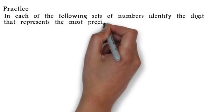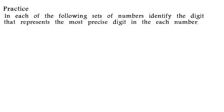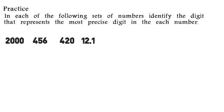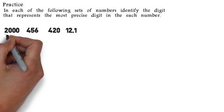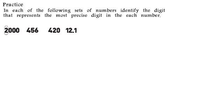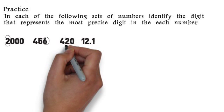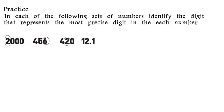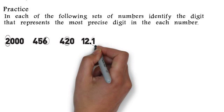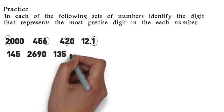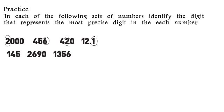Let's do some practice. In each set of numbers we'll first identify the digit that represents the most precise digit in each number. In 2000, the 2 is significant and the three zeros are placeholders, so the 2 is the most precise digit. In 456 the 6 is the most precise digit. In 420 the 2 is the most precise digit because the zero is a placeholder. In 12.1, the 1 in the tenths place is the most precise digit.